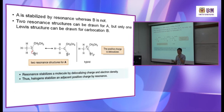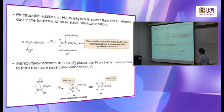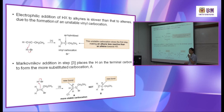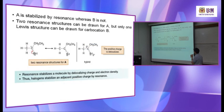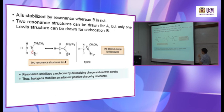The resonance stabilizes the molecule by delocalizing the charge and electron density — the electron can move from bromine to the carbocation and back. Halogen stabilizes the adjacent positive charge by resonance because it has lone pair electrons it can donate to form a double bond. After forming this resonance structure, the bond can break back to give the original structure — these are the two resonance contributors.